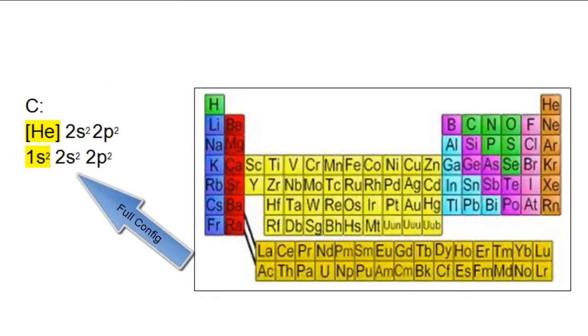Below the noble gas electron configuration is the full electron configuration for carbon. I highlighted 1s2 in the full electron configuration because 1s2 is the electron configuration for helium.